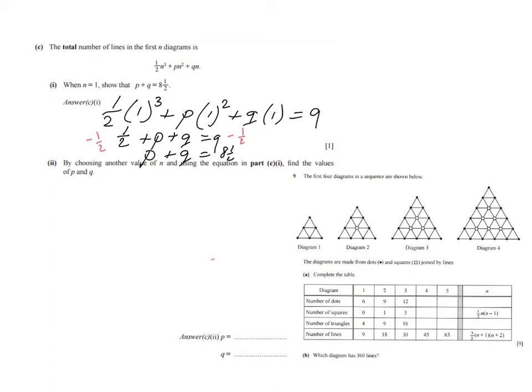But then for, I believe, 5 or 6 points even, they say the following. By choosing another value of n and using the equation in part ci, so this one, find the values of p and q. And hopefully you realize that this is a question involving simultaneous equations. So I have one equation here with p and q. Those are two unknowns, two variables. So I need two equations in order to solve for those two variables.